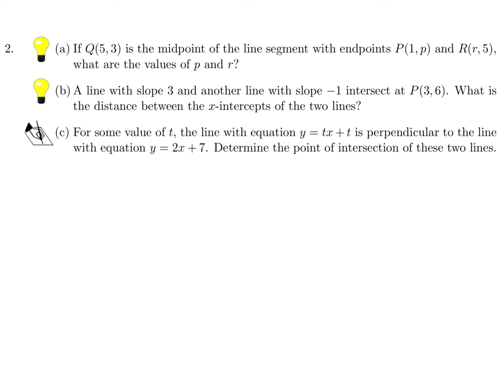If (q,5) is the midpoint of the line segment with endpoints (1,p) and (r,5), what are the values of p and r? The midpoint formula is you add the x coordinates and divide by 2, and you add the y coordinates and divide by 2. They've told me that midpoint is (5,3). So this equals 5, and this equals 3. 1 + r = 10, so r = 9. And on this side, p + 5 = 6, therefore p = 1.